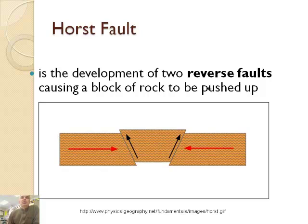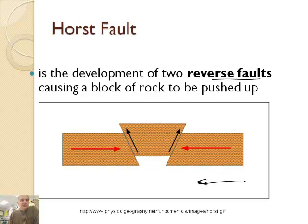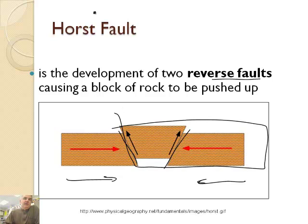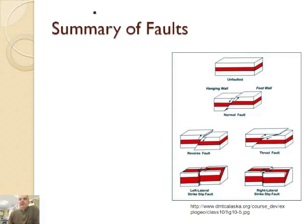And then the last one is the horst fault. It is the development of two reverse faults. Remember we learned about reverse faults, that's when they're coming together. And as they come together, you've got your fault zone right here and here, it pushes this up. So it's one where you've got both two potential forces causing this to occur. If you take this and cut it in half, that's a reverse fault, but the horst is kind of a combo, double reverse really.